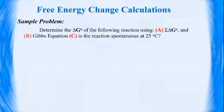Let's do mathematical calculations on free energy changes. The problem is: determine the free energy change of the following reaction using (A) the summation of free energies, (B) the Gibbs equation, and (C) determine if the reaction is spontaneous at 25 degrees Celsius. The reaction is CO gas plus H₂O gas yielding CO₂ gas plus H₂ gas.